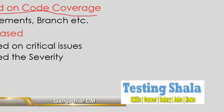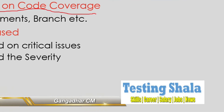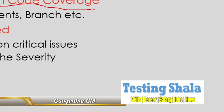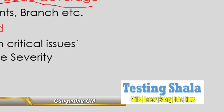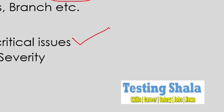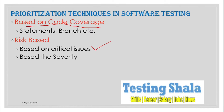The second technique is risk-based testing. In risk-based testing, we focus our test case execution and test case creation on critical functionality and critical issues. We also prioritize our test cases based on severity, and defects are also fixed based on their severity.